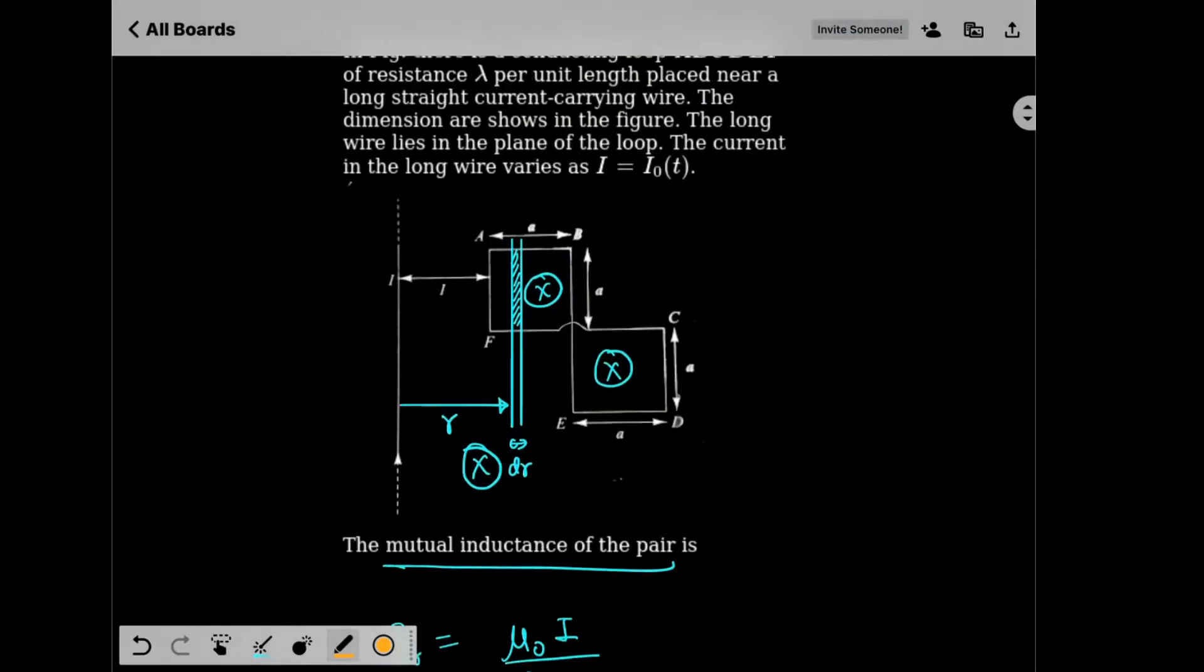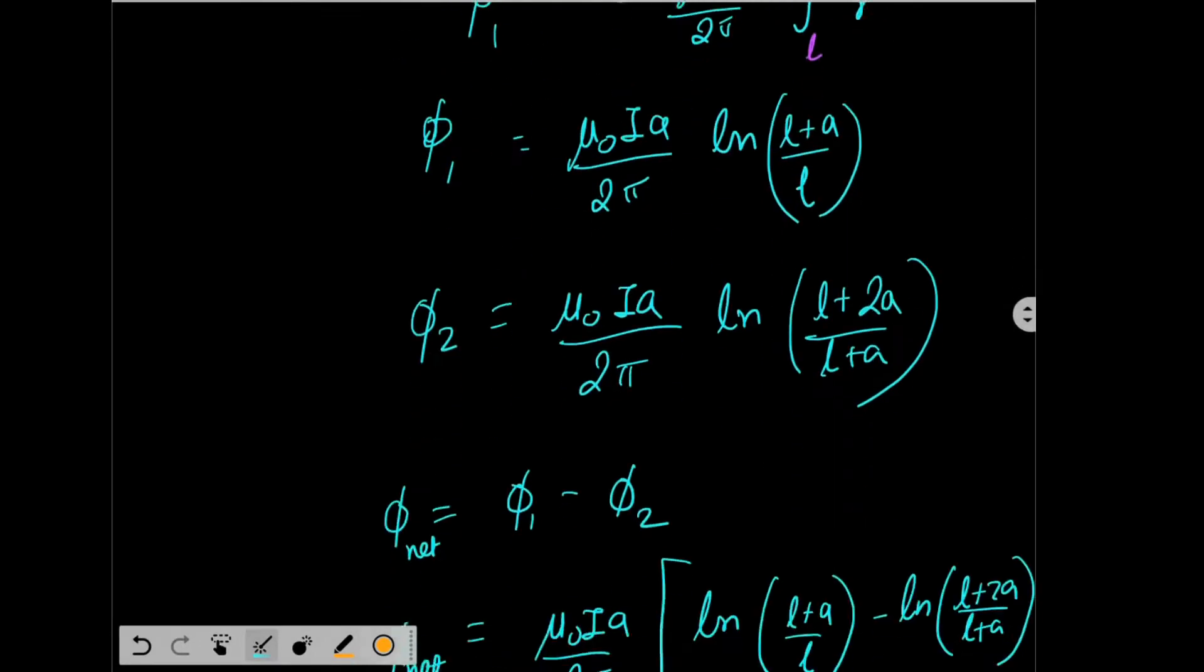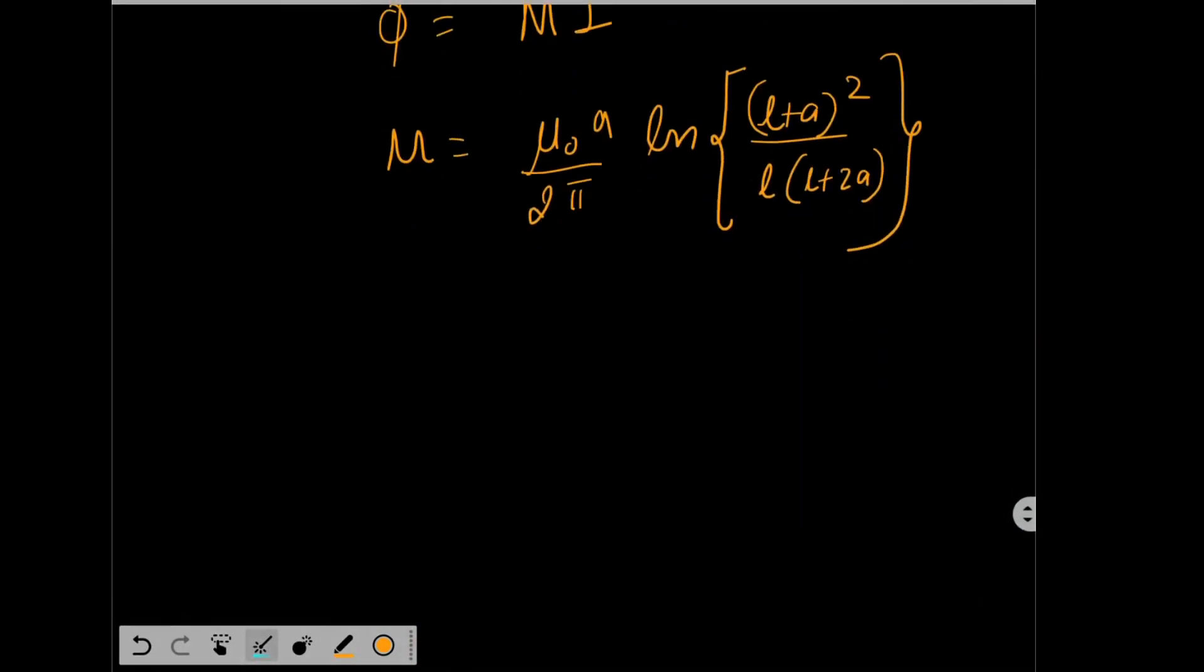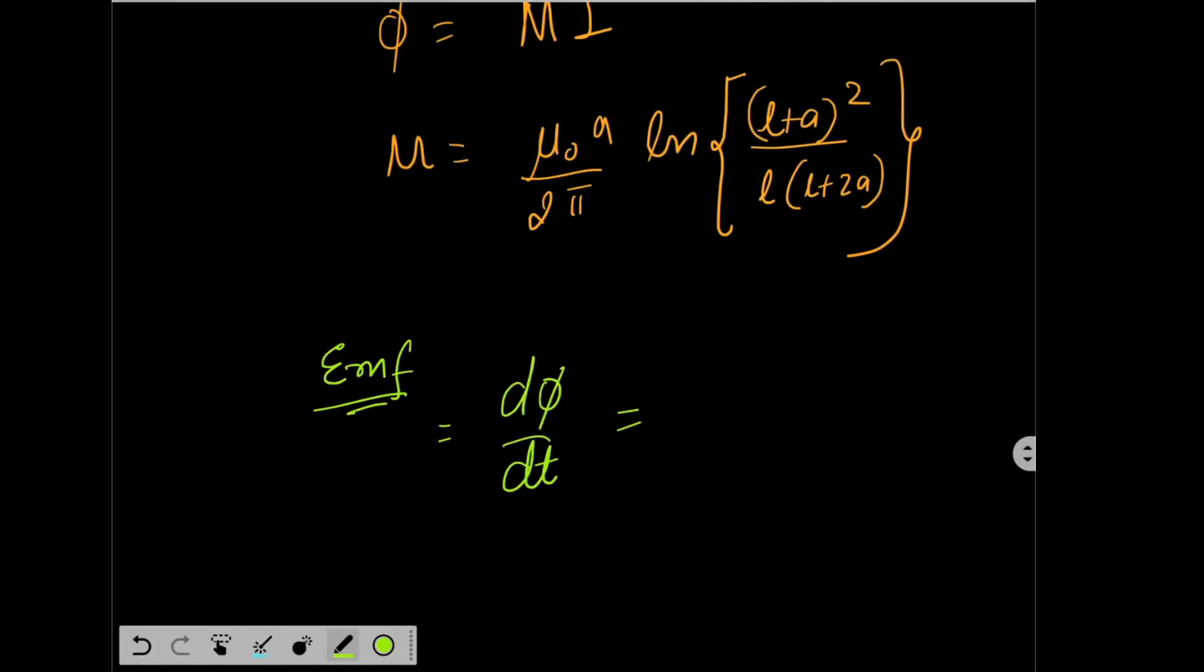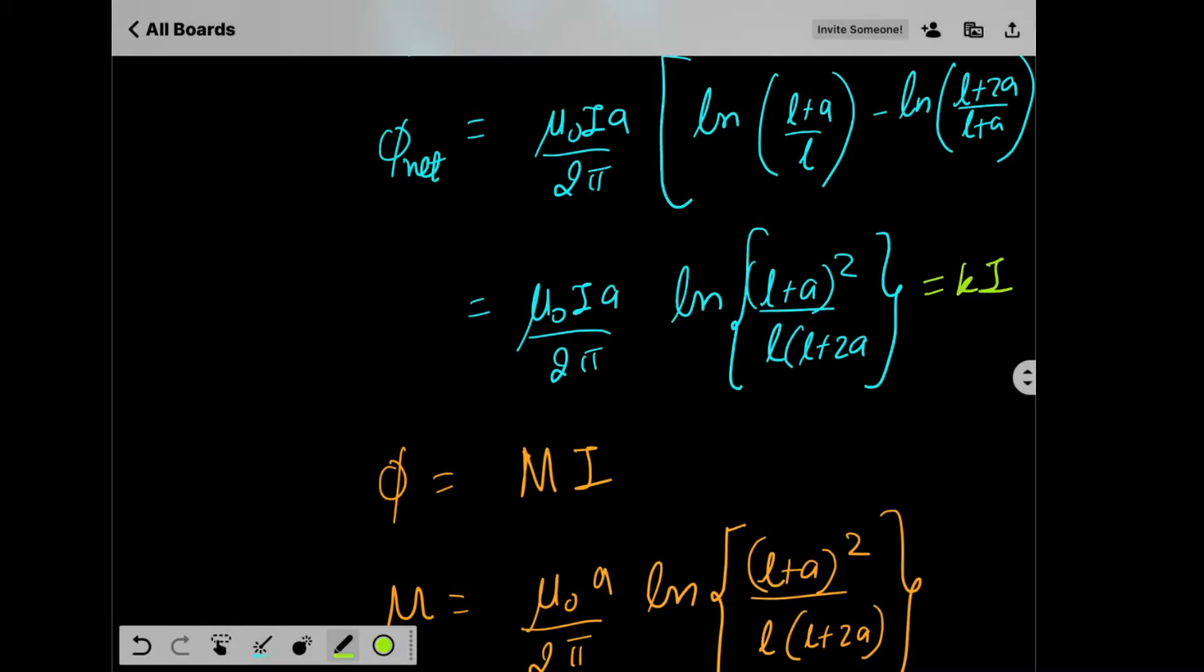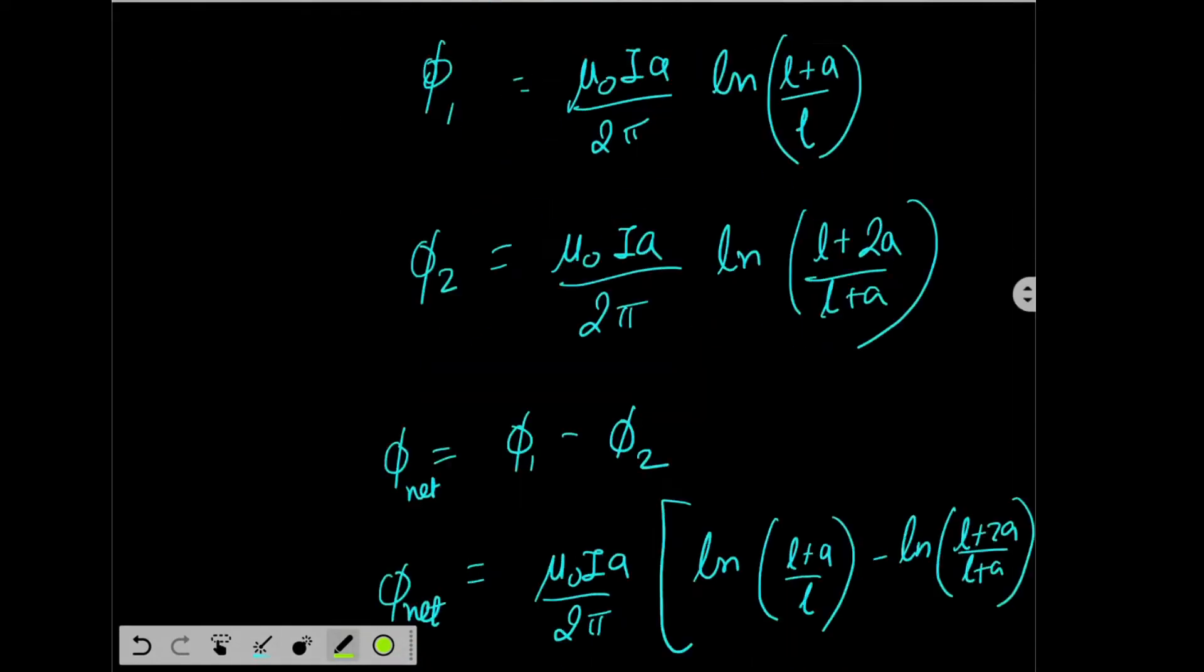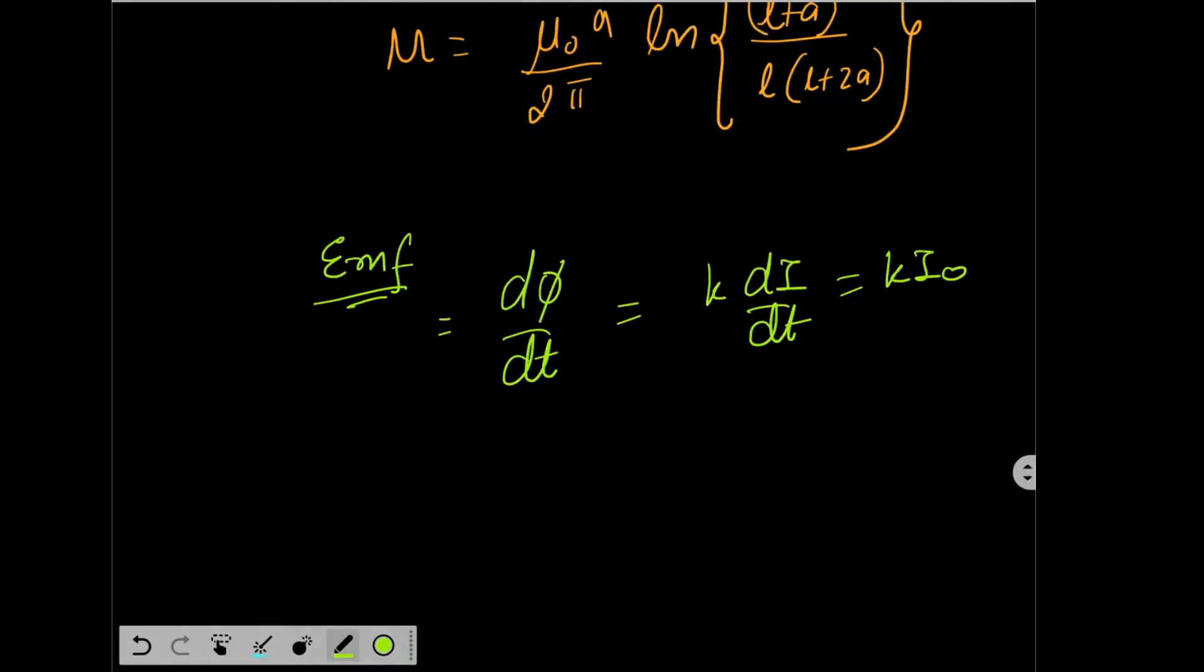Now since there is so much information given in the question, we can also find the current in the loop as well. Since we know the net flux, we can differentiate this flux to find the EMF. So the EMF in the loop will be D phi by DT. So that will be equal to Mu0 A by 2 pi. Actually let me write this as Ki. So I get K Di by DT. And since I is equal to I0 into T, so I get this to be equal to K I0. So I found the EMF.